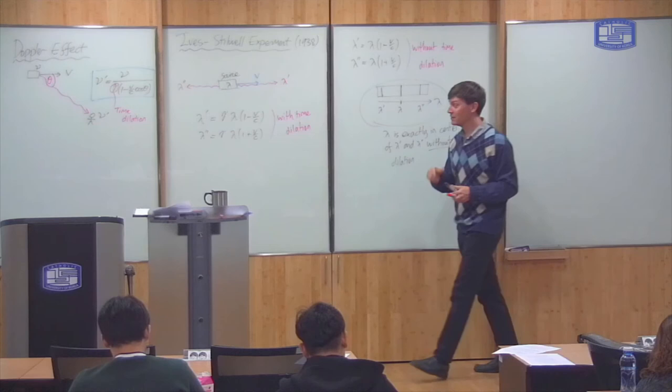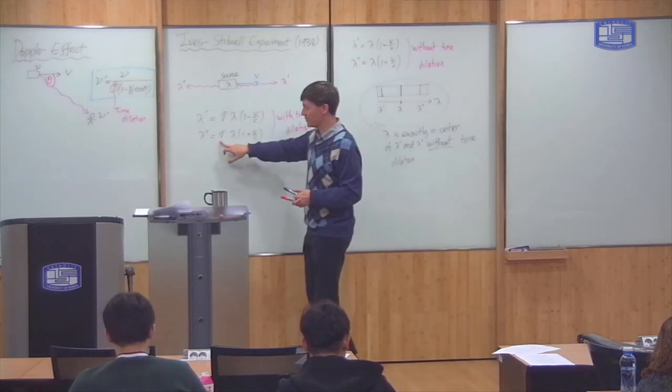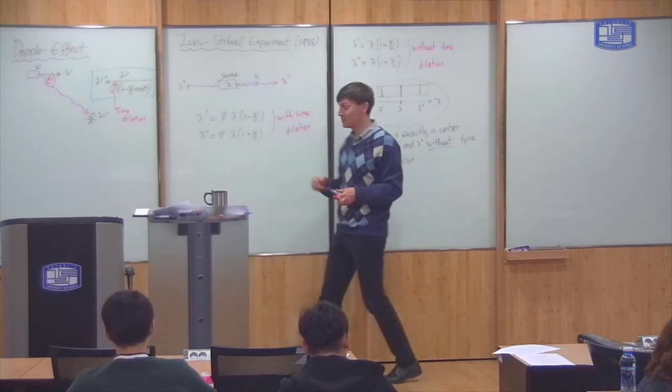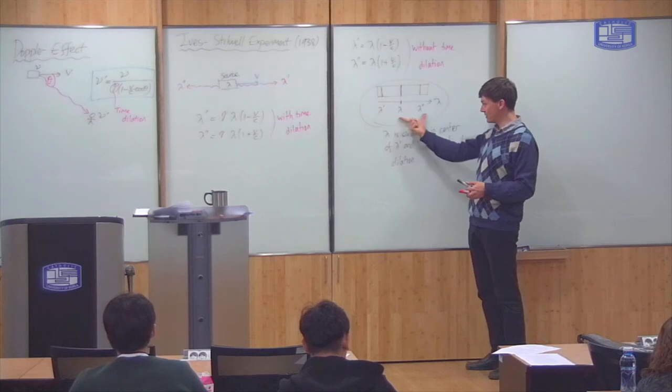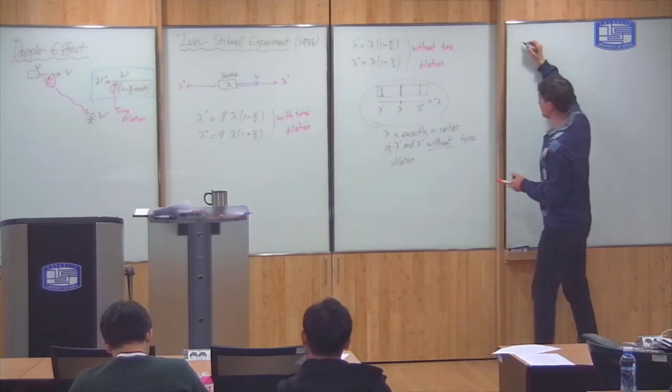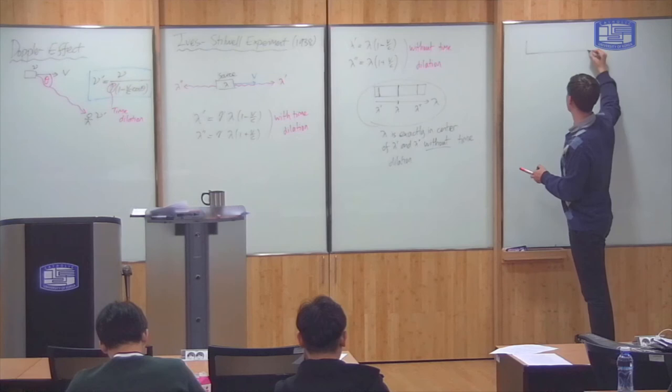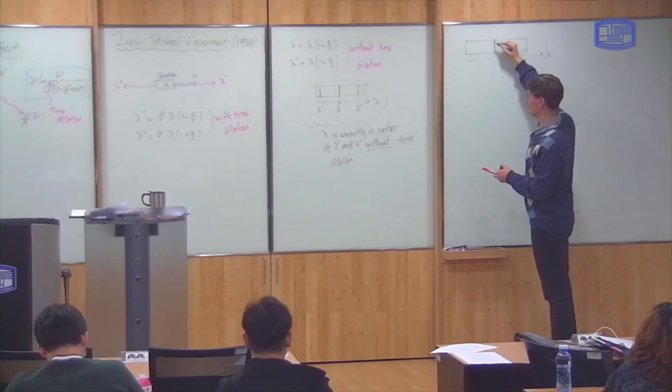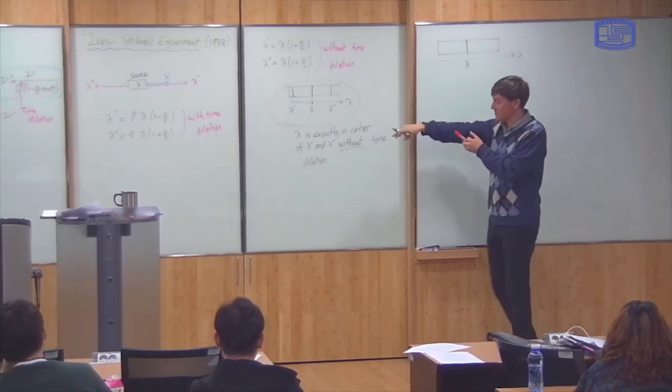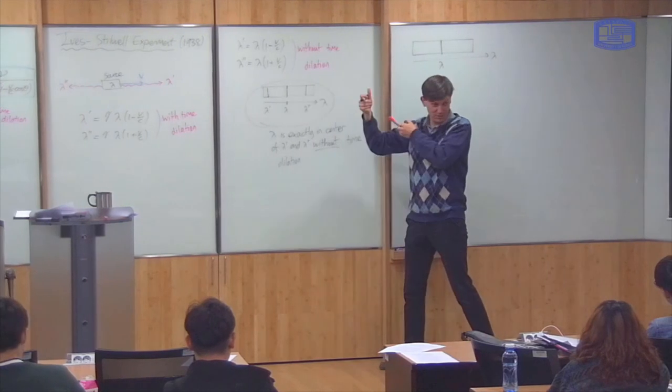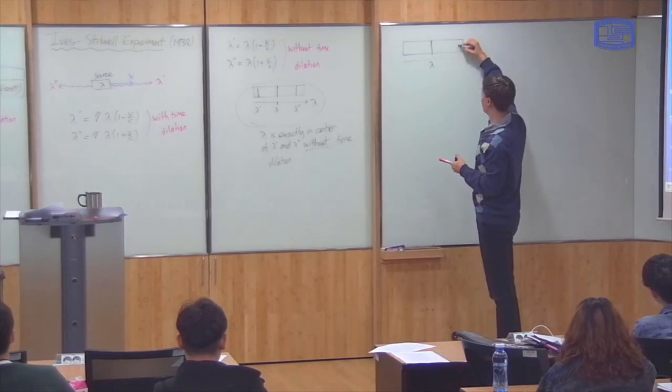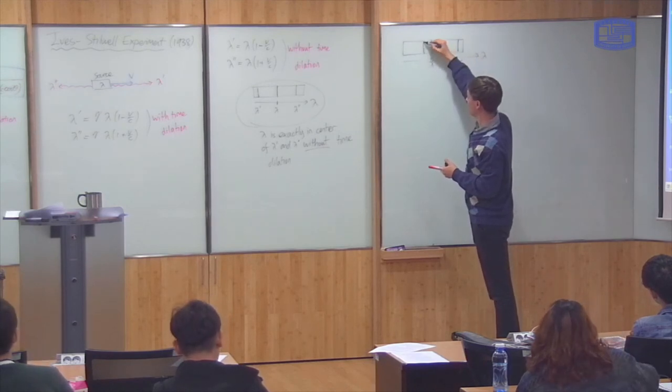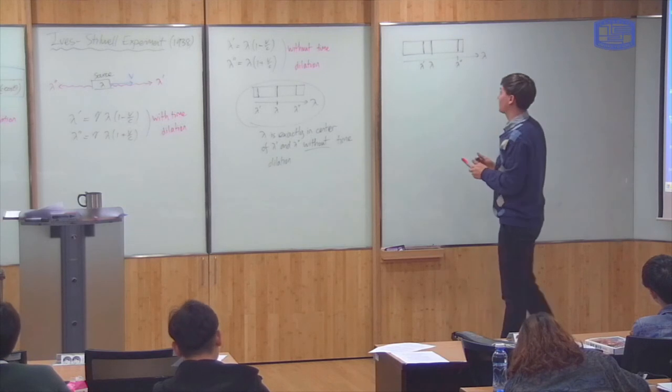However, if there is time dilation, then that means that this gamma factor will be more than one, and that will increase all the wavelengths, lambda prime and lambda double prime. So that will shift the lambda prime and lambda double prime wavelengths this way. So with time dilation, you get a picture like this. Same picture again. It's lambda. But now, both of the Doppler-shifted wavelengths are increased. So that means lambda double prime will move further over this way, and lambda prime will be less.